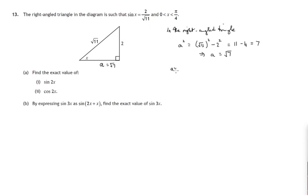Let's tackle part A. We need to find the exact value of sine 2x. The double angle formula tells us there's one version of this and it's twice sine x cos x. Sine is opposite over hypotenuse, that's 2 over root 11.